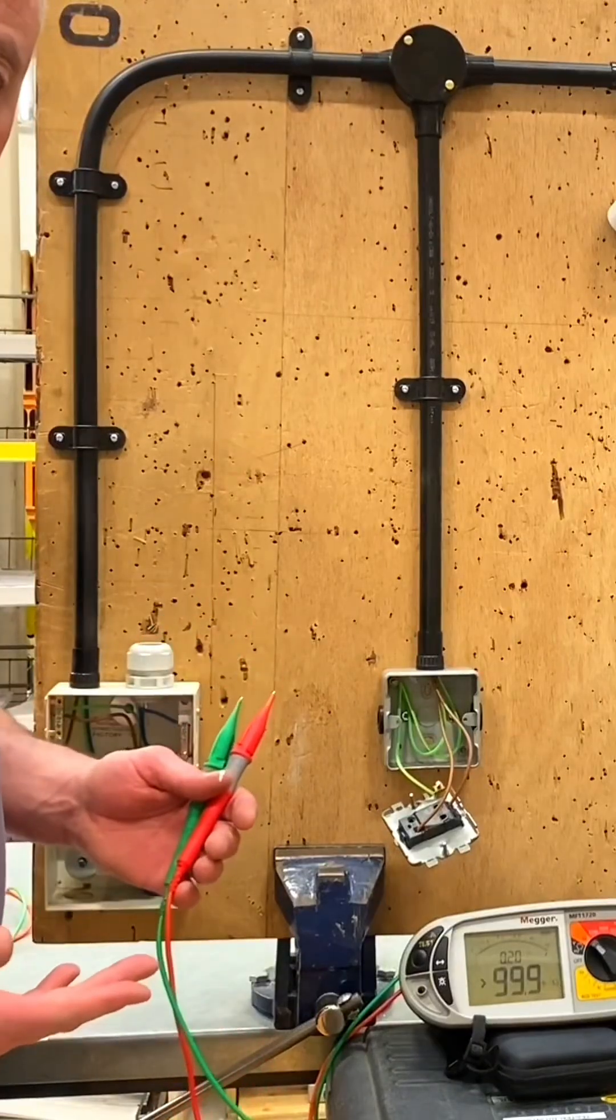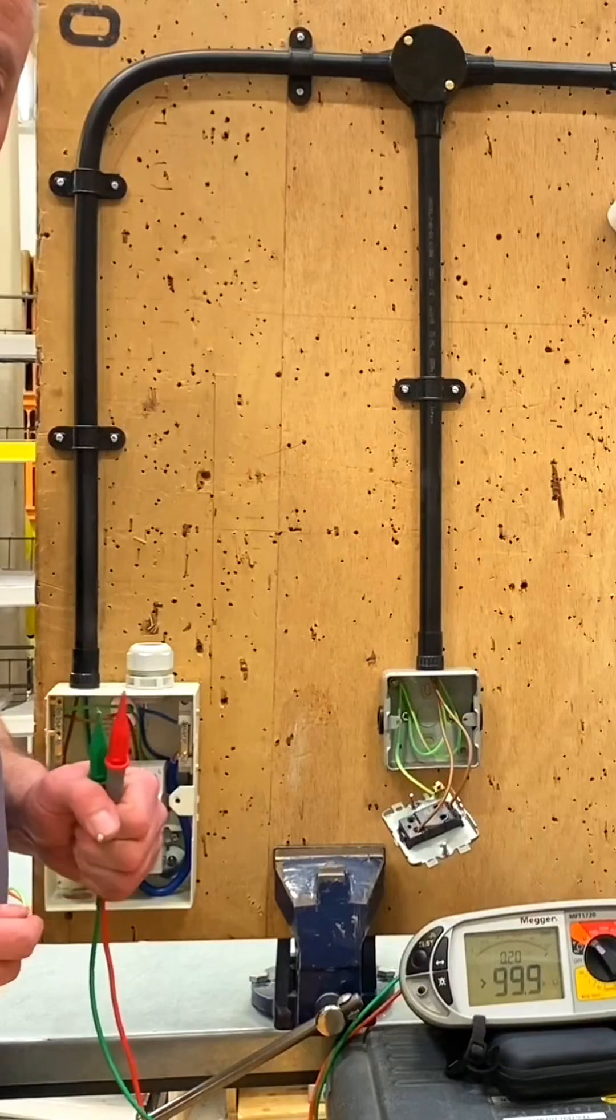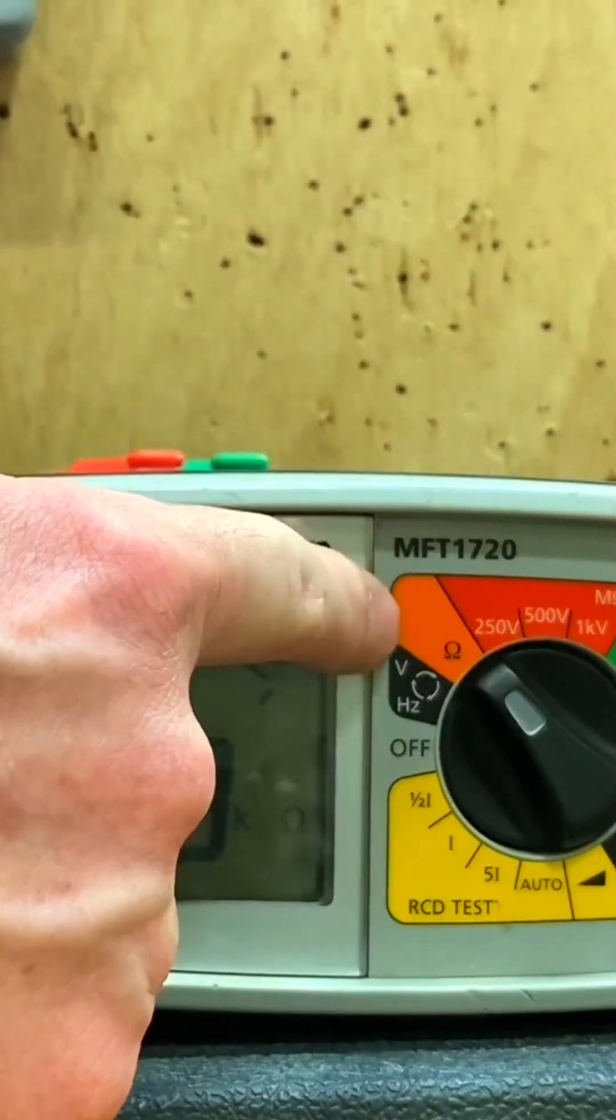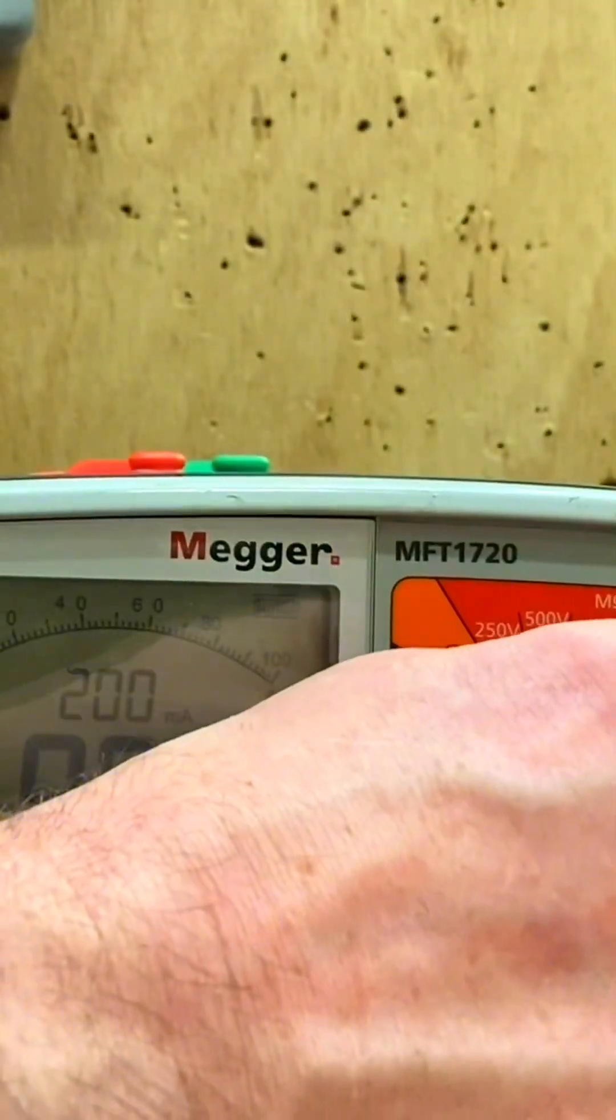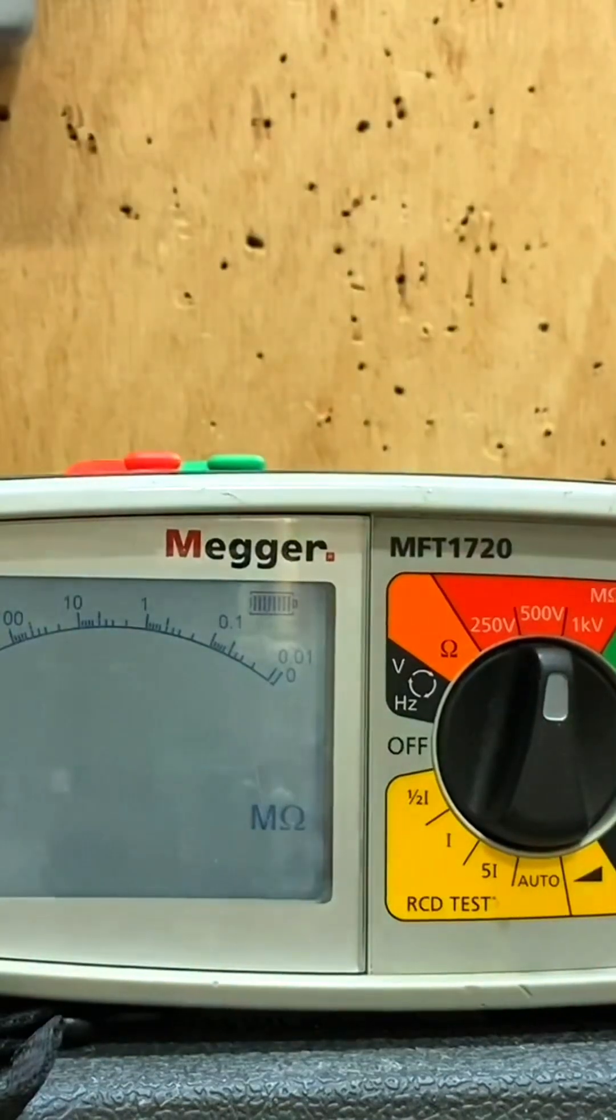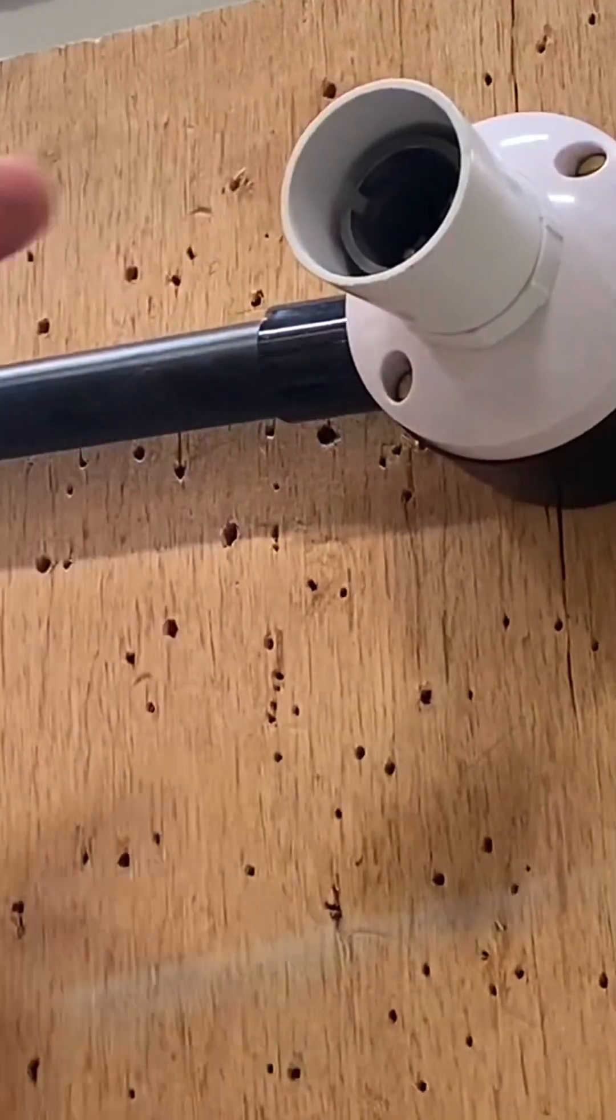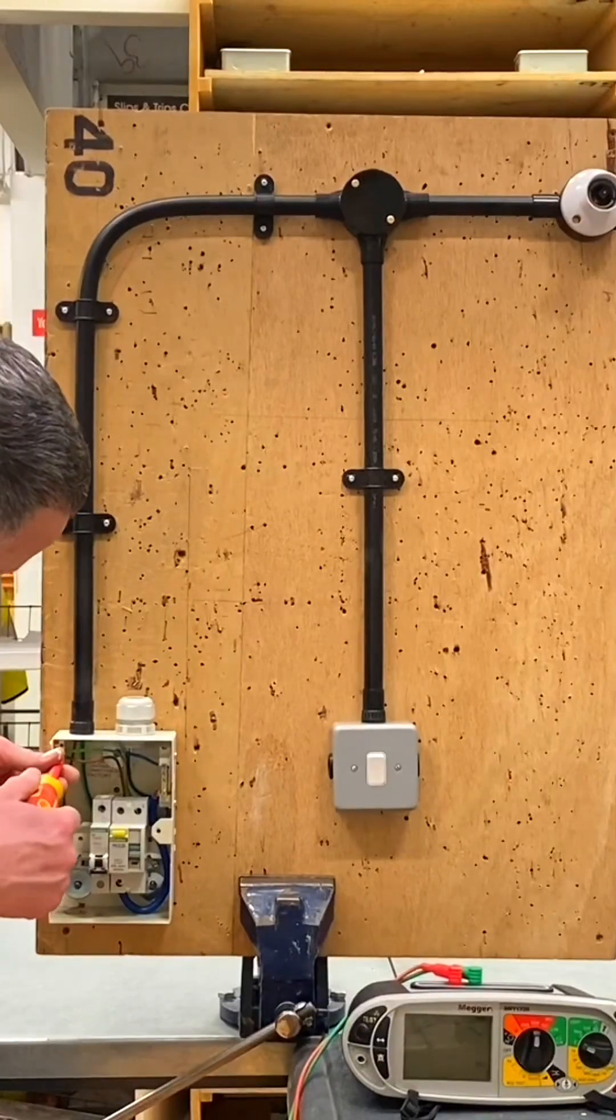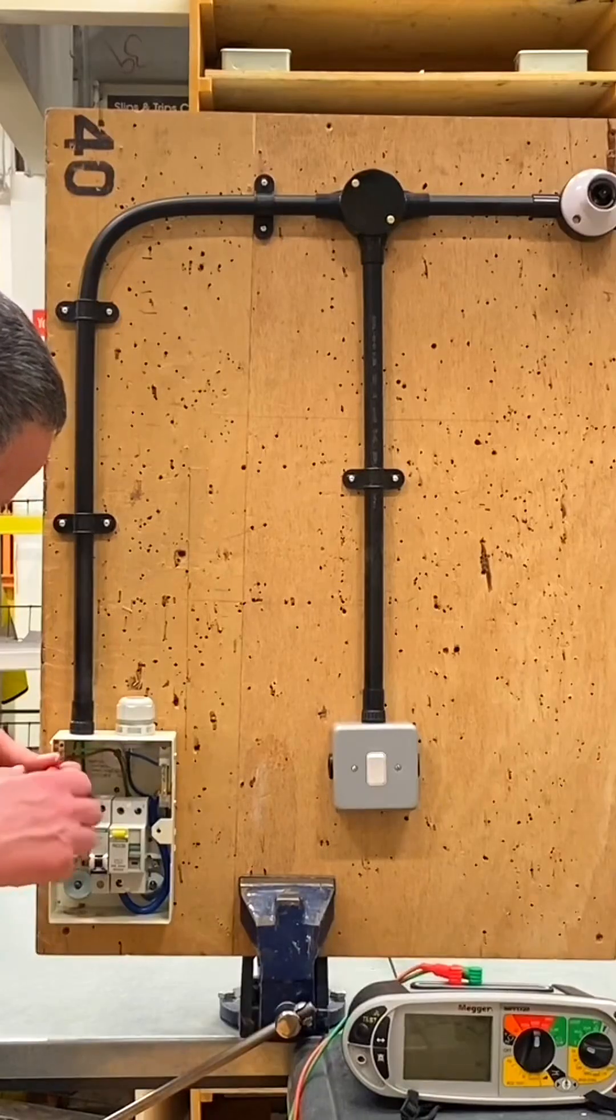Now we need to put all the covers back on, leave the switch in the on position so we can carry out our insulation resistance test next. Let's change our instrument from ohms - we're measuring the resistance of the conductors for continuity - to the mega ohm scale. We're going to be testing at 500 volts DC to perform our insulation resistance test on our 230 volt lighting circuit. We've put the covers back on, our load's been removed so we've got no lamps in circuit, our switch has been left in the on position.